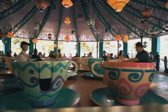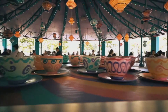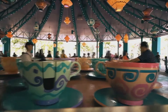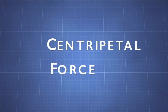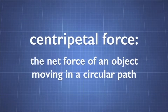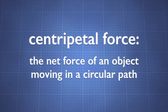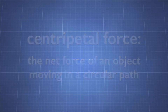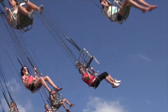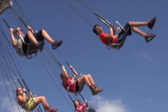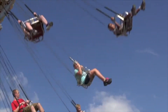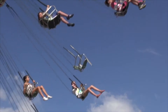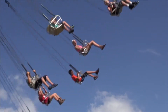Without centripetal force, an object will move in a straight line. Centripetal force is the net force of an object moving in a circular path. The tension in the chains of these swings causes the people riding them to be constantly pulled towards the center to follow a circular path.